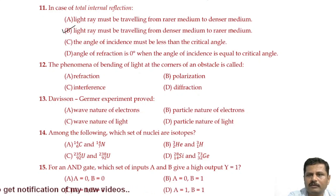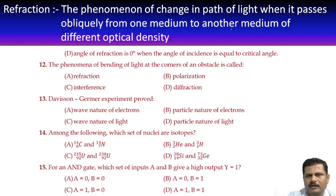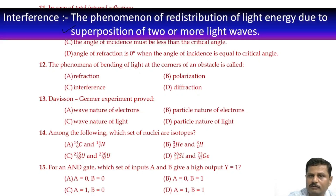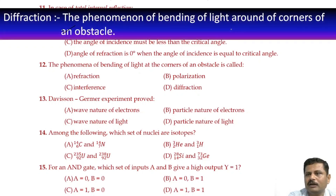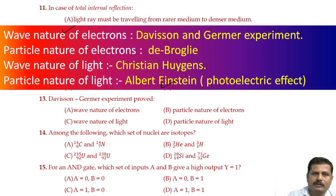The phenomenon of bending of light at the corners of an obstacle is called diffraction. Refraction is the change in the path of light when it passes obliquely from one medium to another. Polarization restricts vibrations of a light wave to one plane perpendicular to the direction of propagation. Interference is the redistribution of light energy due to superposition of two or more light waves. Diffraction is the bending of light around the corners of an obstacle. So option D is the right answer.